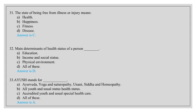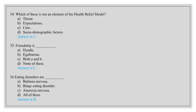Ayurveda, Yoga and Naturopathy, Yunani, Siddha and Homeopathy. Which of these is not an element of the health belief model? Threat, expectations, cure, sociodemographic factors. Answer is C, cure. Friendship is dyadic, egalitarian, both A and B, none of these. Answer is C, both A and B.